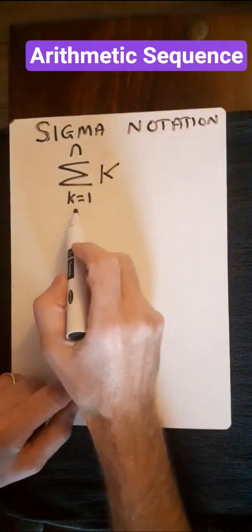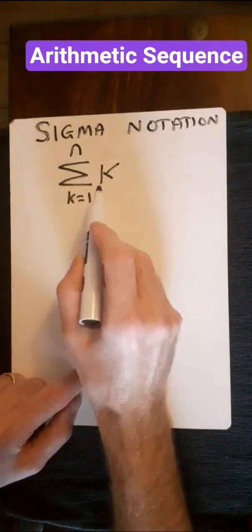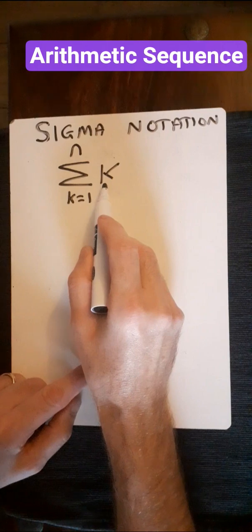So sigma notation, and we're going to sum k equals 1 to n. And what we're going to sum is the value k.